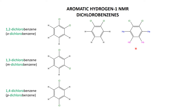How will those two peaks be split? HA is adjacent to one proton, so that will be a doublet. HB is adjacent to one proton — remember, its equivalent partner doesn't count as an adjacent proton, that's its twin. So HB is also adjacent to just one proton. I should see two doublets, each worth two hydrogens.